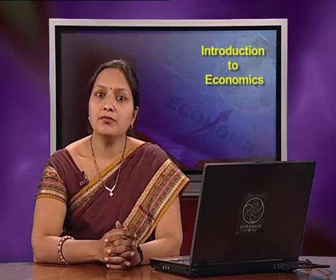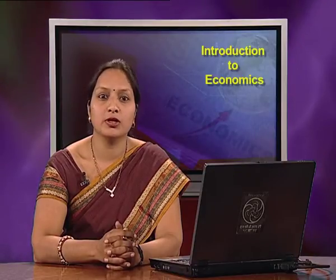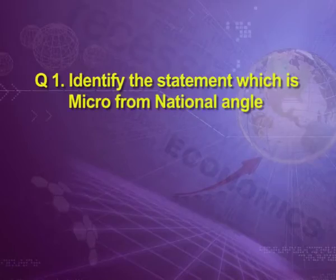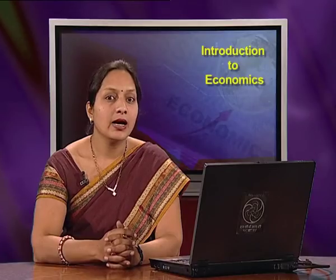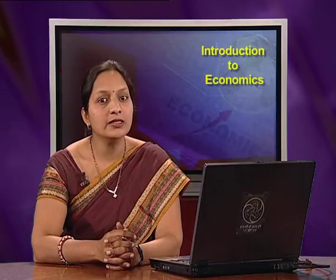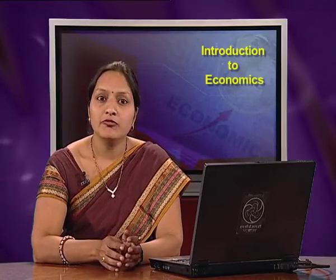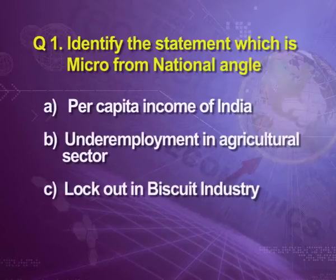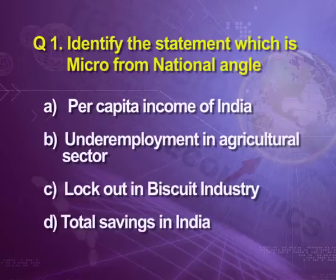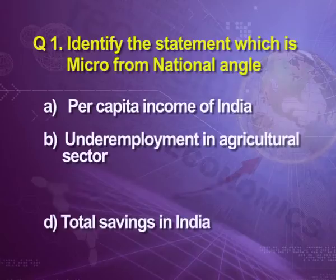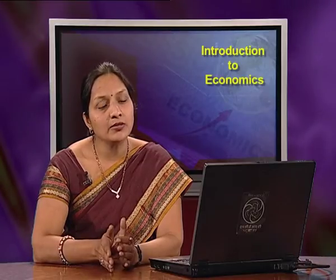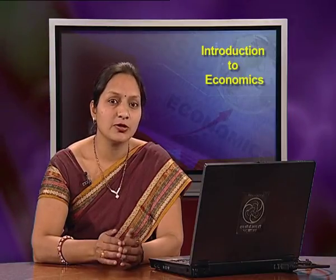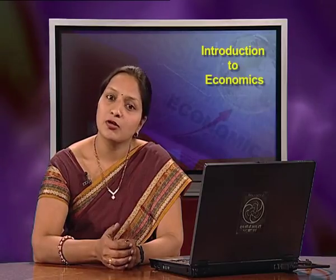Now some multiple choice questions to make your concepts clearer. Question 1: Identify the statement which is micro from a national angle. Options: (A) per capita income of India, (B) underemployment in agricultural sector, (C) lockout in biscuit industry, (D) total savings in India. The answer is option C — lockout in biscuit industry. Per capita income, underemployment in the agricultural sector, and total savings in India are all macro aspects.